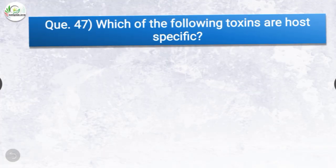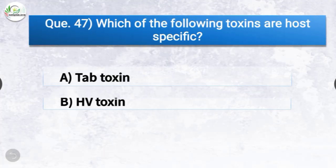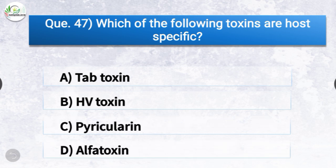Question number forty-seven: Which of the following toxins are host-specific? The options are TAP toxin, HV toxin, pyriculorin, or alpha toxin. The correct answer is option B, HV toxin. HV toxins are host-specific and are produced by Helminthosporium victoriae.